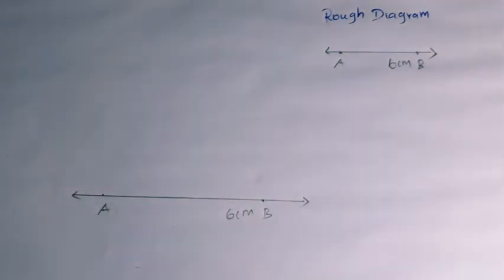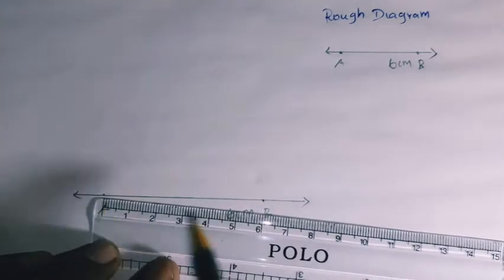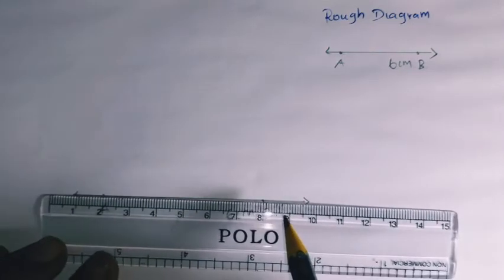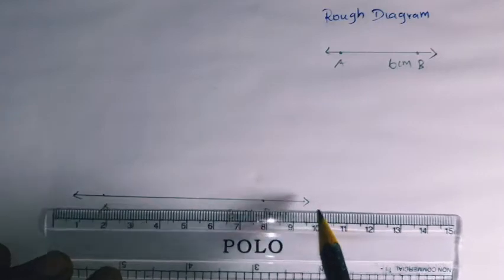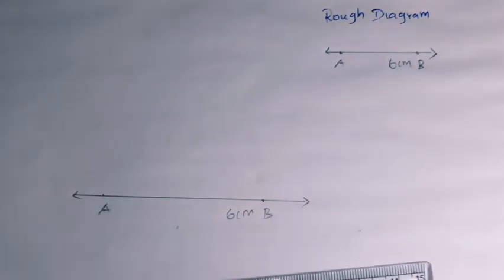Now write the labels clearly. Draw a line at point 0 (dot) and at 6 cm (dot). Use the scale to extend the line with arrow marks. Label one point as A and the other point as B.